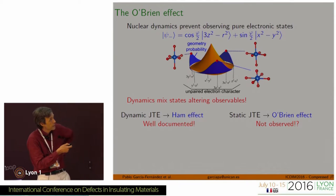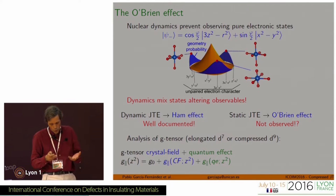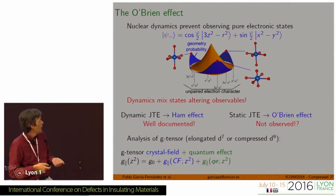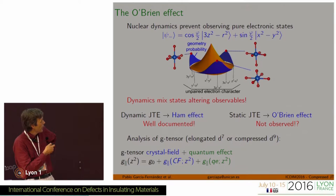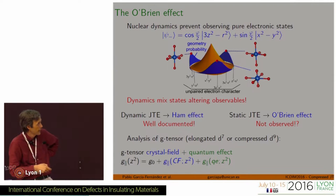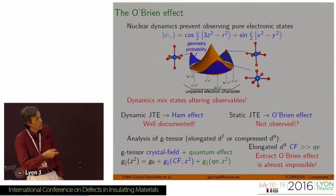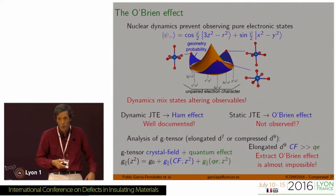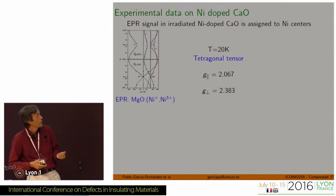On the other hand, when you go to the static Jahn-Teller effect, this is called the O'Brien effect, and this has not been observed — though this is arguable. When you observe Jahn-Teller impurities, you usually observe G-tensors using EPR. The G-tensors have a crystal field contribution and an extra contribution due to quantum effects. In an elongated D9 complex, the crystal field is much larger than the quantum effects, so extracting the quantum O'Brien effect is really complicated and cannot be done experimentally.